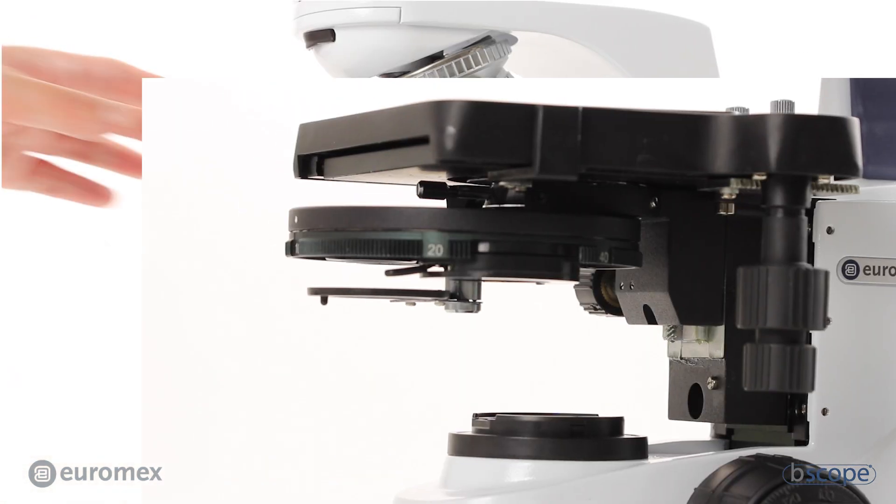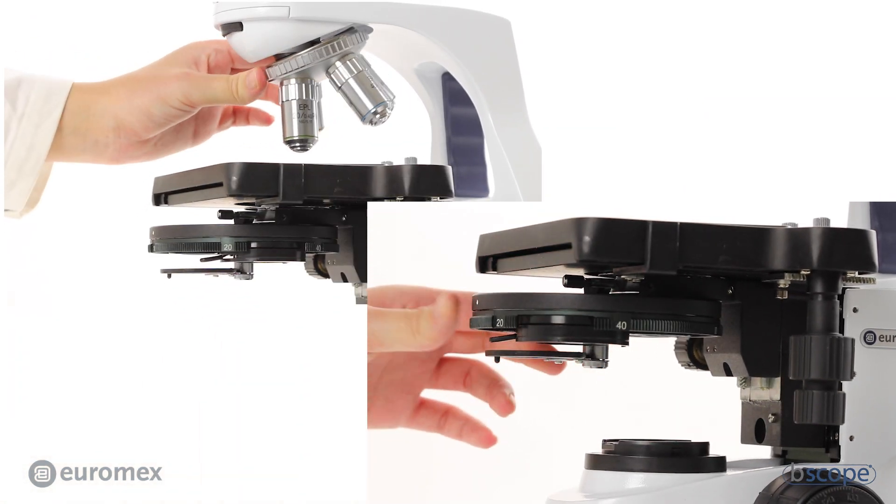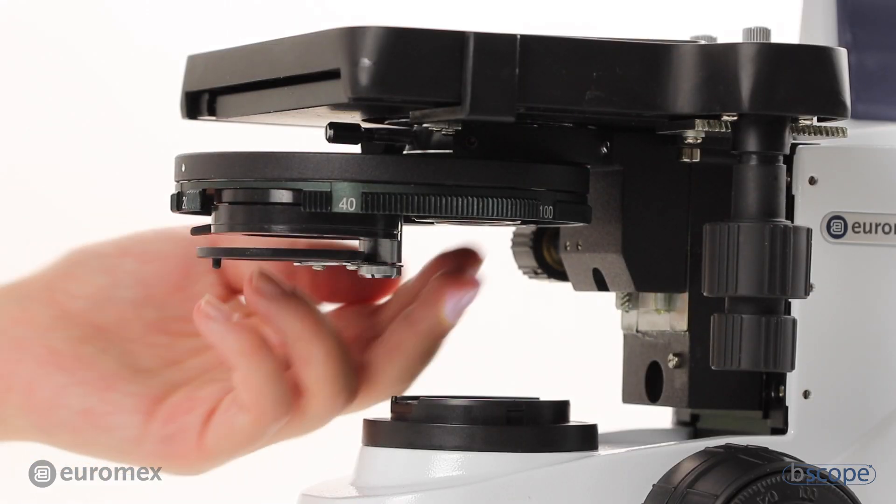To continue, choose the 20 times objective and 20 on the selector and center the annulus for the 20 times objective.